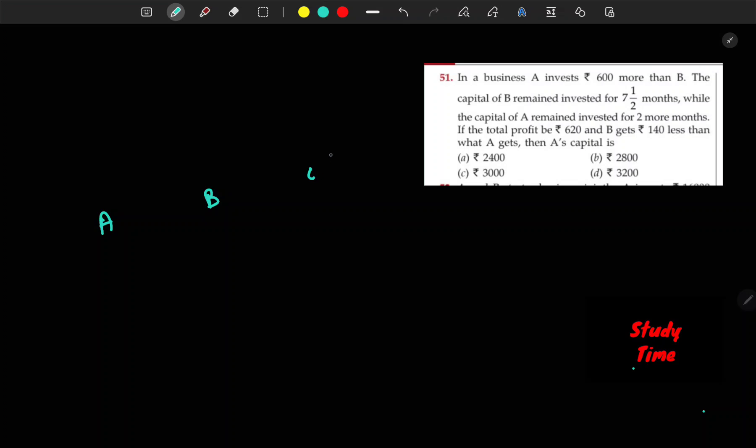So this is business problem with A and B. A and B, X plus 600 for A.